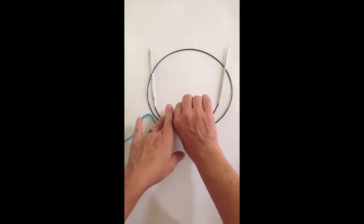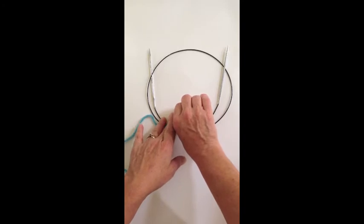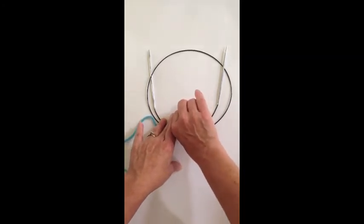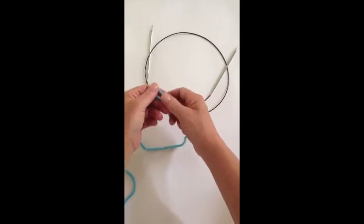This is a great cast on, quick and easy and great for places where you need a little extra elasticity such as the cuffs of mittens and socks or the brim of a hat.